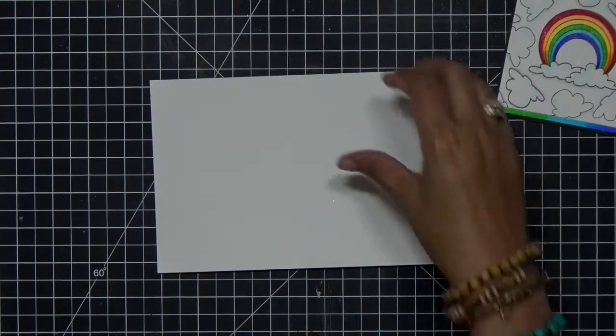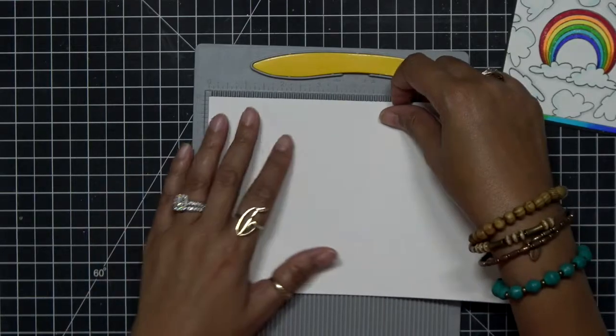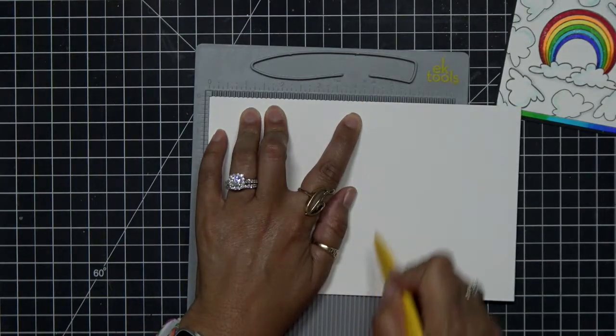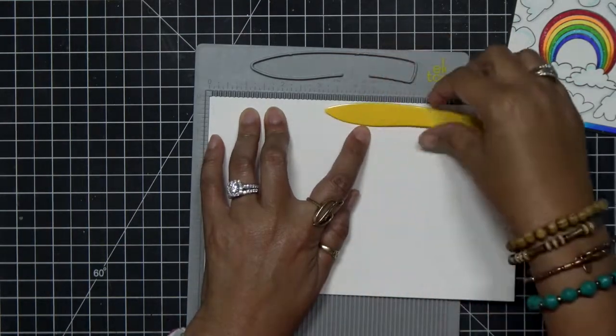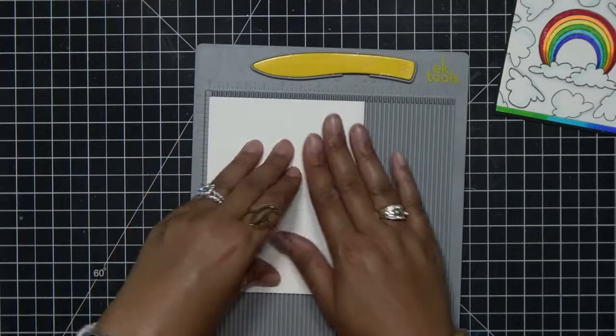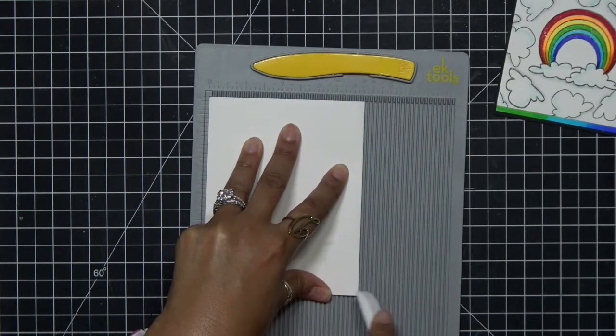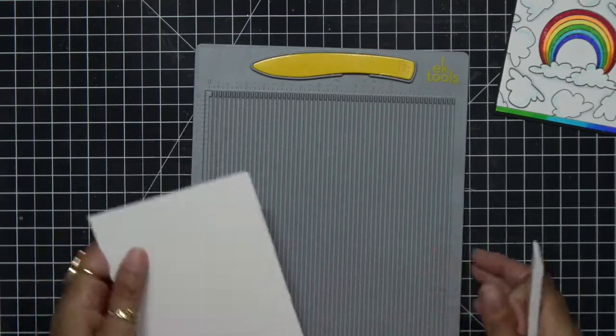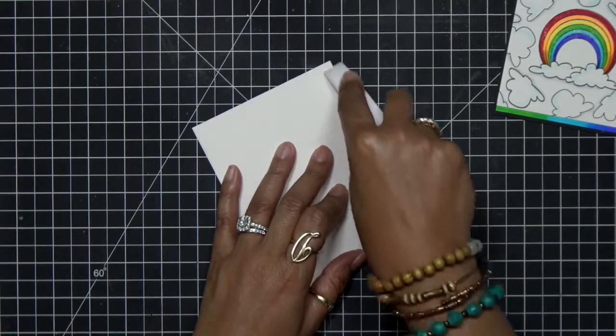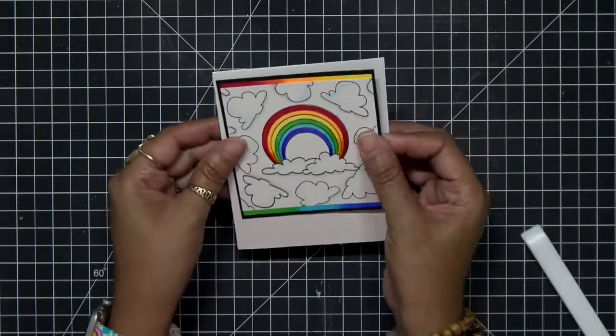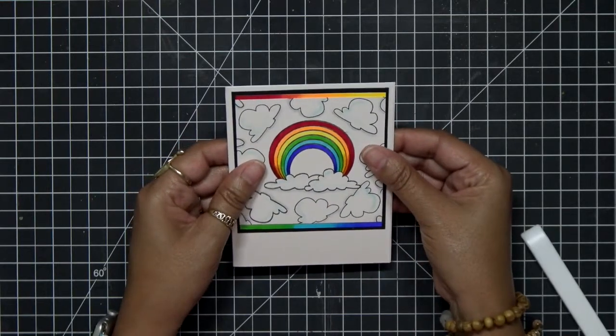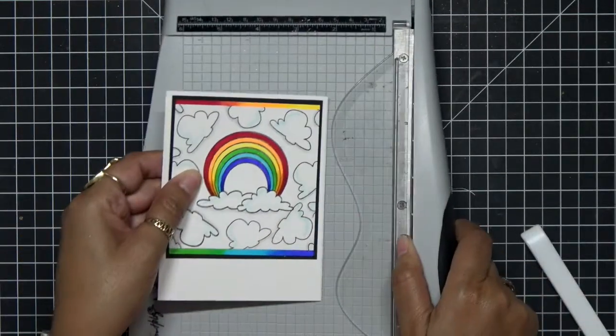I'll line that up and then go ahead and press that down. Now I have this gorgeous background. For the card base today, I'm going to use my EK Success Tools scoreboard. And I like to score it with the little bone folder that comes with it. But when I go to fold it over and to crease my edges, I like to use my Teflon bone folder. I just find that I get a better crease when I use that bigger bone folder. Now I am going to trim this card down because I just want it to be a four by four card. And I don't have all that white space at the bottom. So I'm just going to have a little bit of a white border all the way around. And then I can trim down any excess that I need.